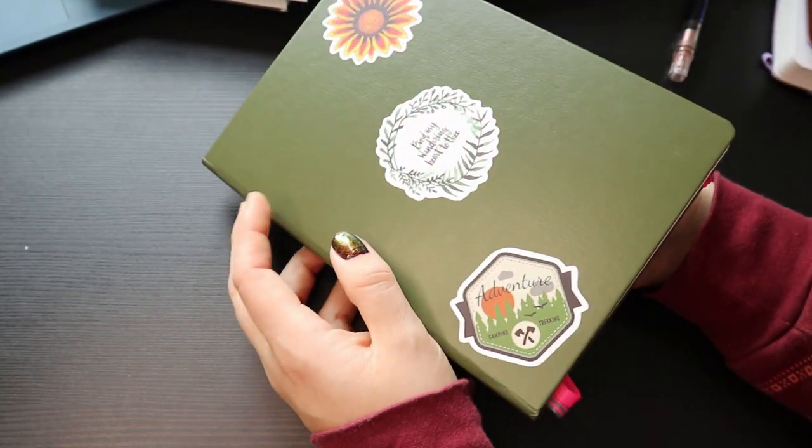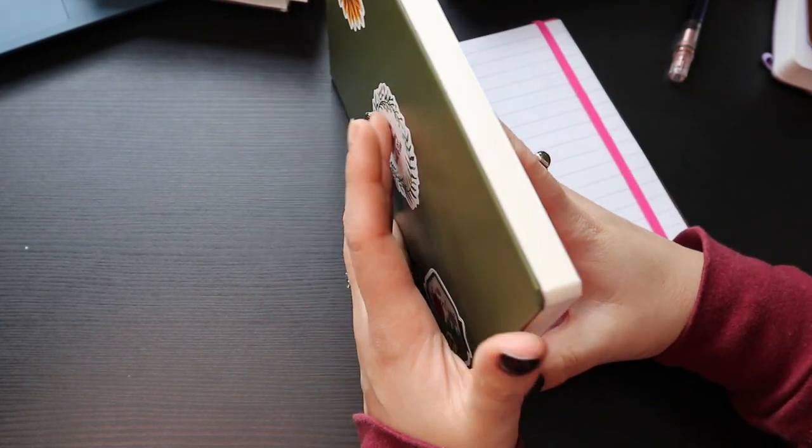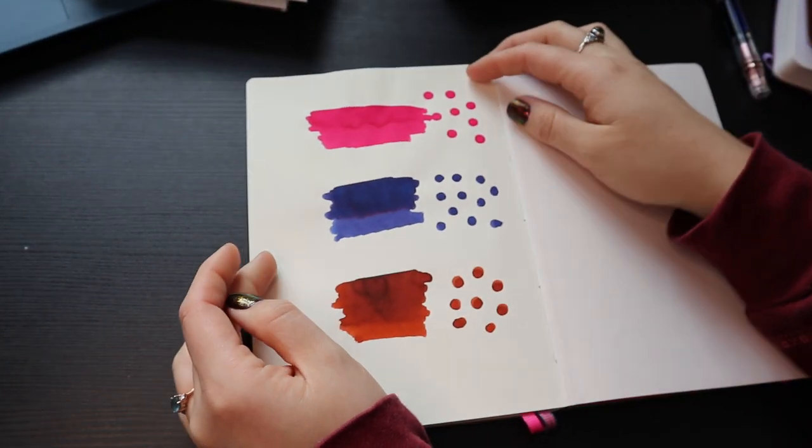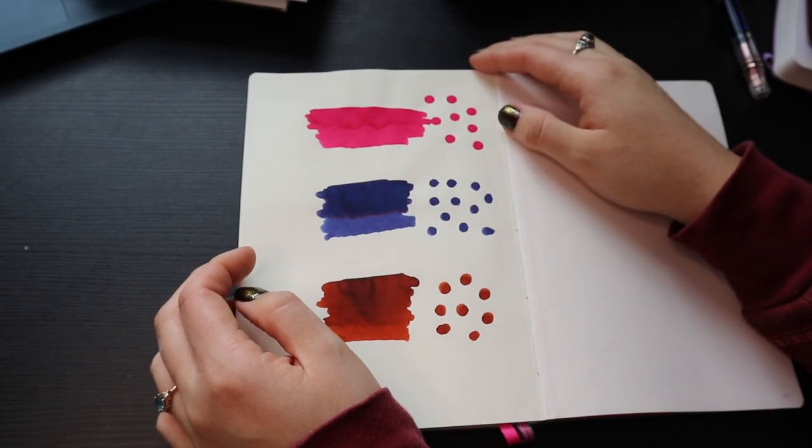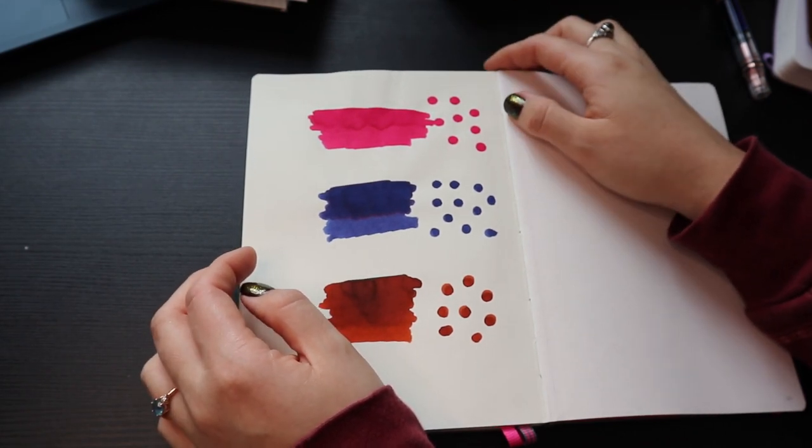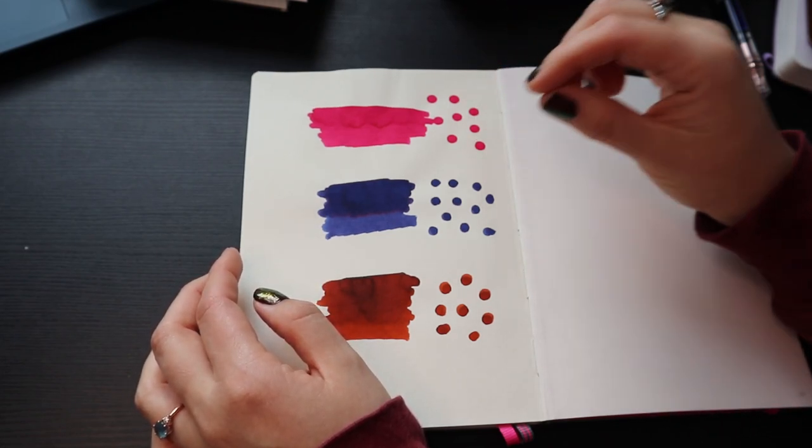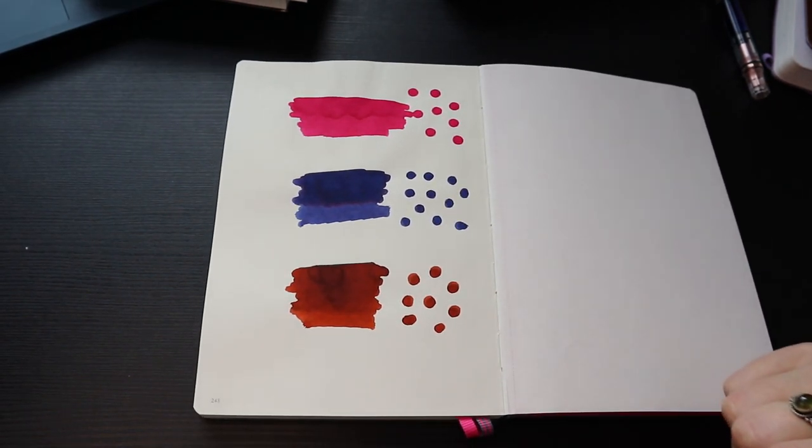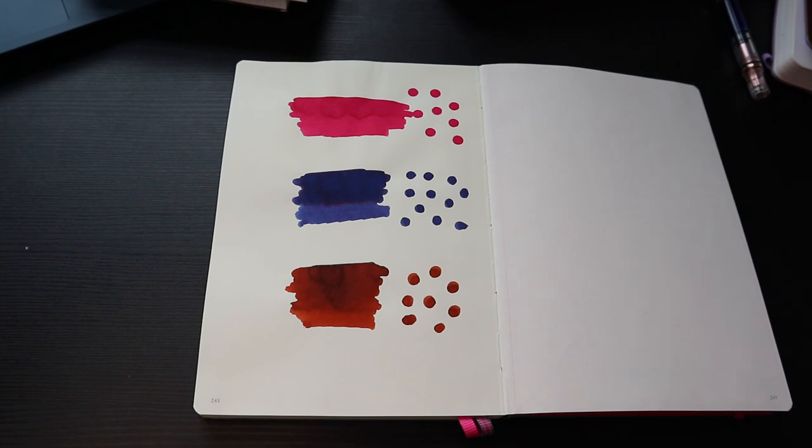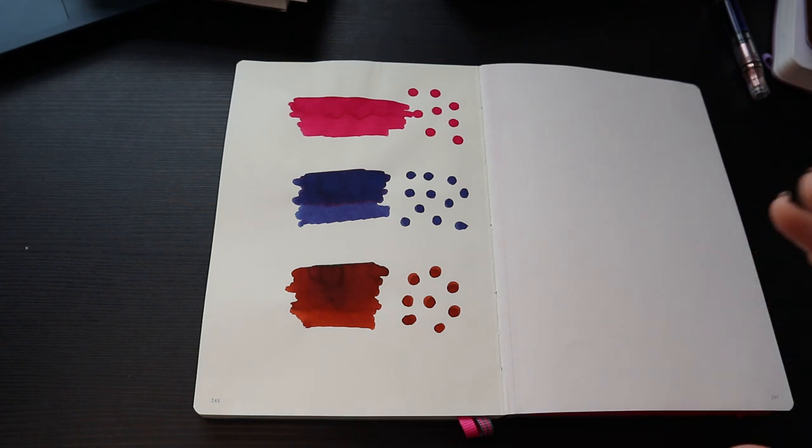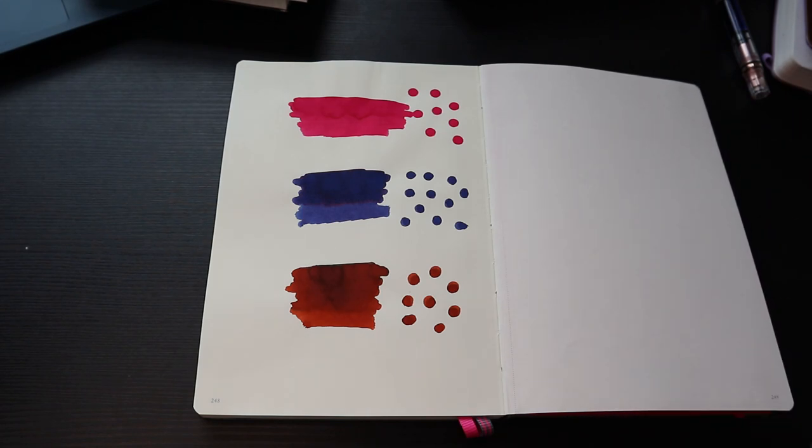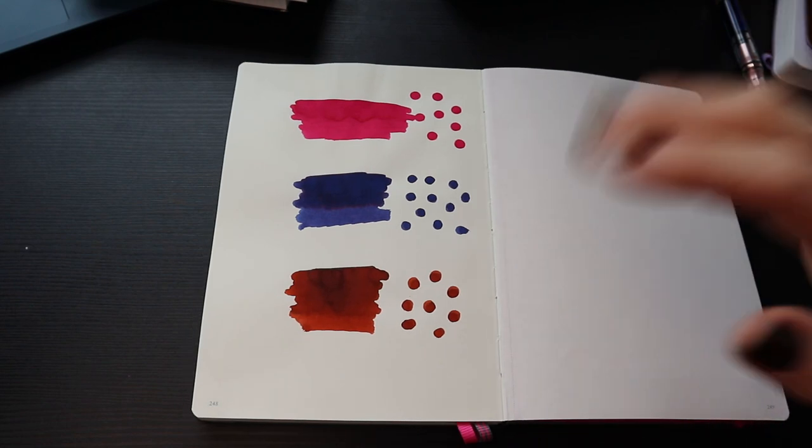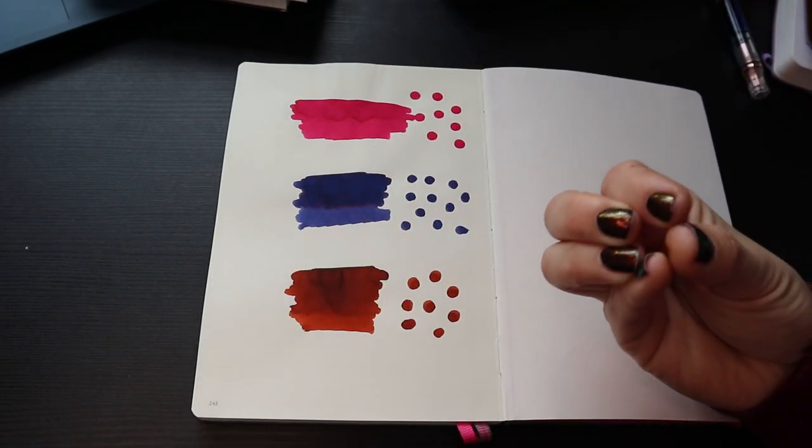So this is a Leuchtturm. People are always a little iffy about Leuchtturm and I get it because it is not the most ink resistant paper. It definitely isn't. It's not coated and it can definitely bleed. So I cannot use, for example, Emerald of Chivor in a Leuchtturm notebook because Emerald of Chivor is so wet. It leaks out of pens for me because it just flows constantly. And I'm talking about a shimmer free one. I have a shimmer free one.